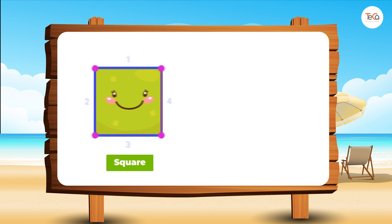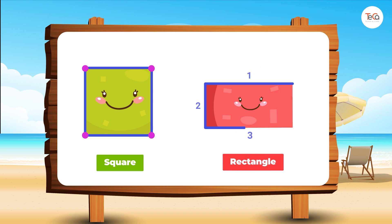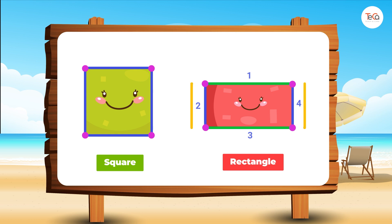Look, this is a rectangle. It also has four straight sides and four corners. These are opposite sides — they are equal. These are opposite sides too, they are also equal.